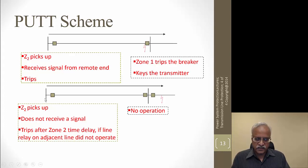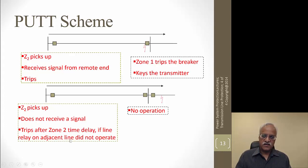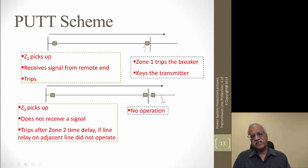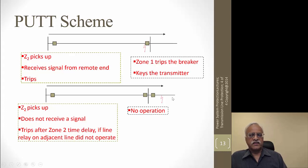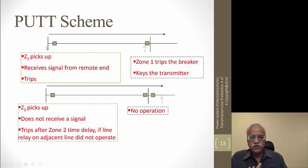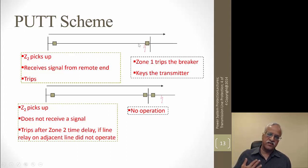If no signal is received, zone 2 picks up but trips only after its time delay — because it has not received a remote signal. This is also the backup behavior: if there is a failure of the signal, it operates on zone 2 time delay. So for a fault within the line section, the local end trips faster, while the remote end trips after a time delay if it does not receive a signal.